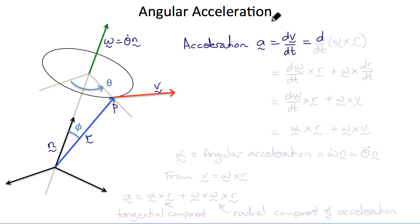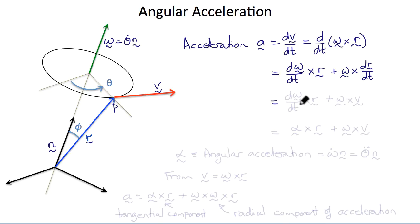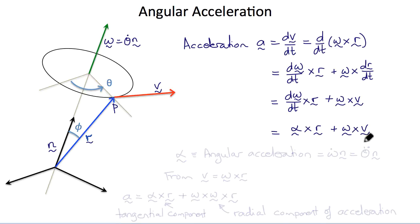The acceleration a is dv/dt, which from our previous result is d/dt(ω × r). Applying the product rule gives dω/dt × r + ω × dr/dt, which is dω/dt × r + ω × v. Since dω/dt is α, the angular acceleration vector, we get a = α × r + ω × v. The angular acceleration α also acts along the axis n, and its magnitude is ω-dot or θ-double-dot.